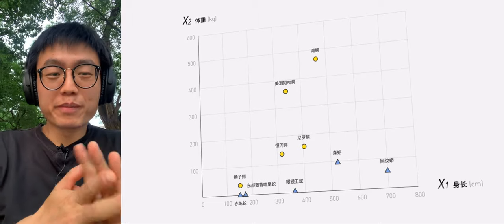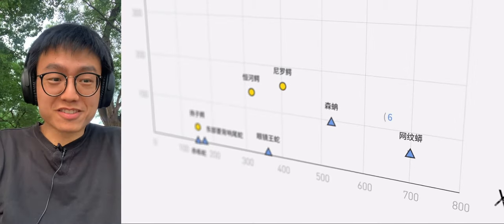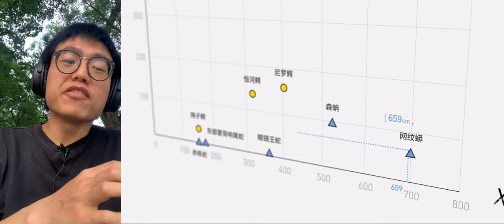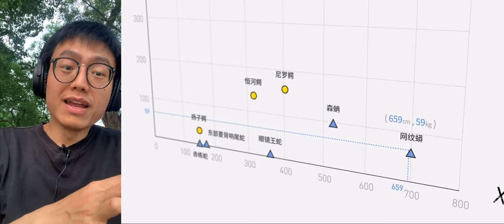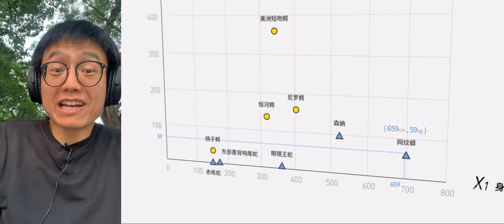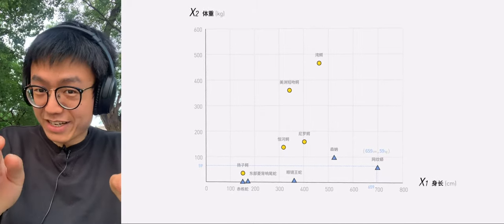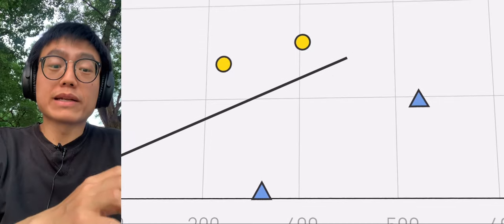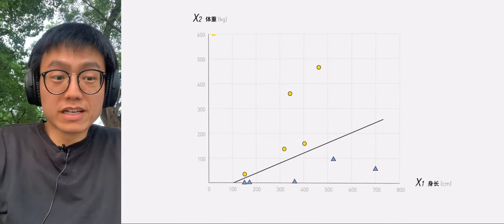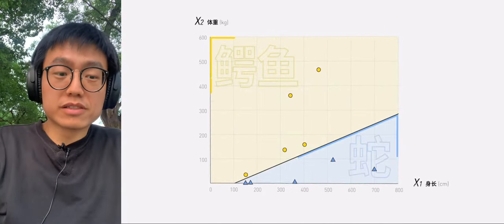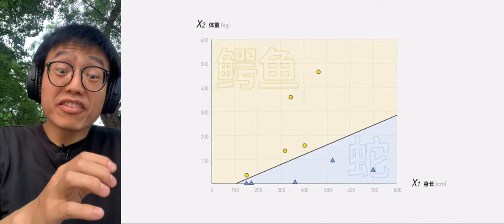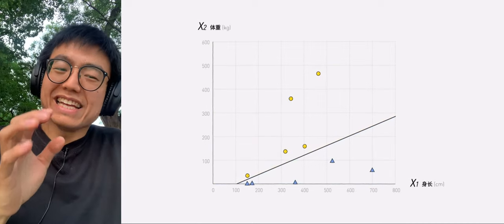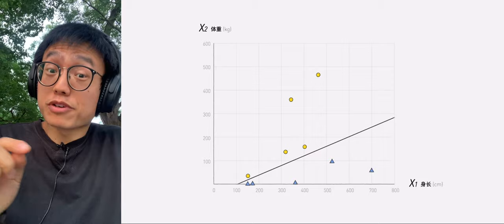For example, reticulated python is 659 cm long and weighs 59 kg. Its position is right here. All we have to do is draw a line to separate crocodiles from snakes. From the same body length, crocodiles are much heavier than snakes, so we can easily draw a line to separate them.